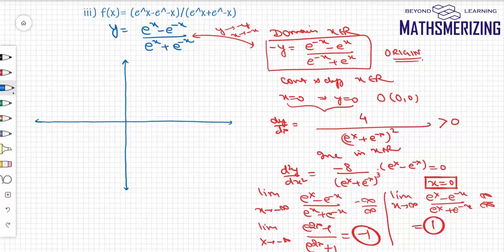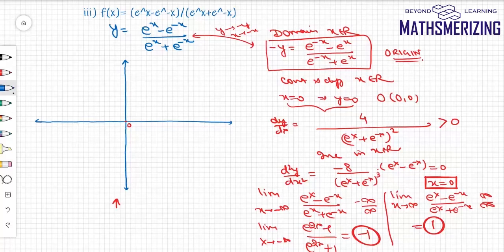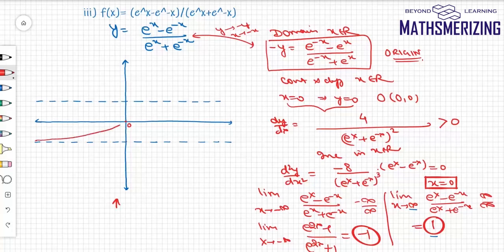Now drawing the graph: the domain is x ∈ ℝ with origin symmetry. The graph is connected and smooth, passing through the origin. It is always increasing with a point of inflection at 0. At −∞, the value approaches −1, so I draw a horizontal asymptote at y = −1. At +∞, the value approaches 1, so I draw a horizontal asymptote at y = 1. The graph starts near −1, increases through the origin where it changes concavity, continues increasing, and approaches 1. That is the graph of (eˣ − e⁻ˣ) / (eˣ + e⁻ˣ).